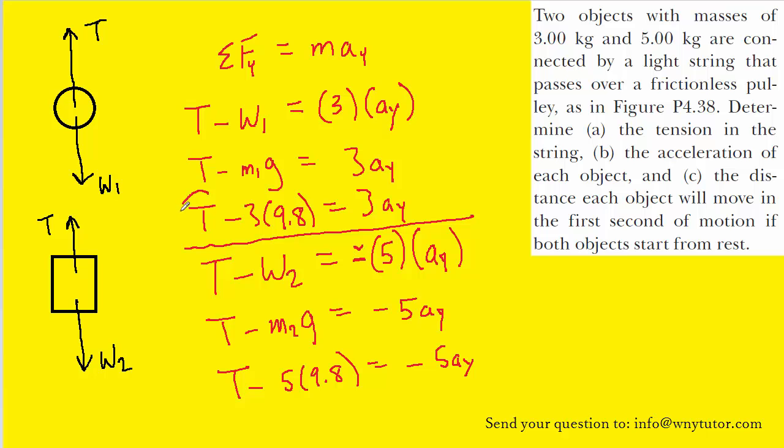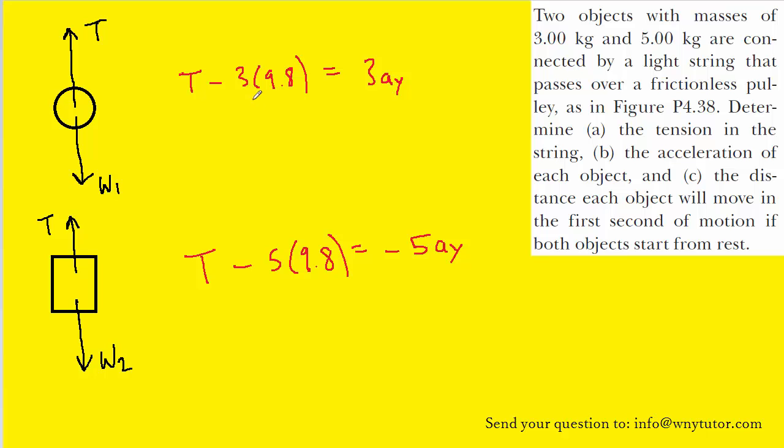It's getting a little cluttered here, so what I'll do is I'll kind of take that equation and its counterpart and kind of separate them away from all the other work we've done so far. What we'll do next is multiply the 3 times 9.8 and the 5 times 9.8. And then we'll add each respective term over to the other side of the equation and solve for T.